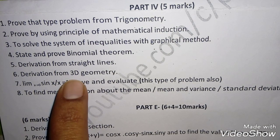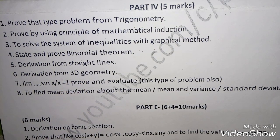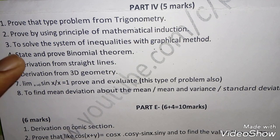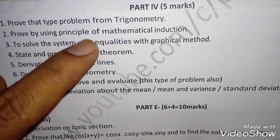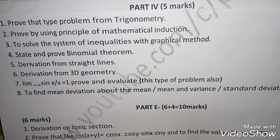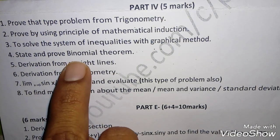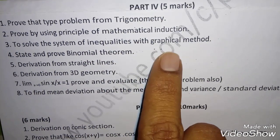So in Part 4 you need to write most probably 6 questions. We have the first one, prove that type of problem from trigonometry, there will be a prove that problem, left-hand side equal to right-hand side. Then we have a prove by using principle of mathematical induction.